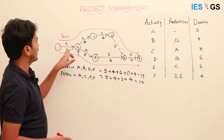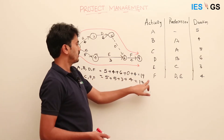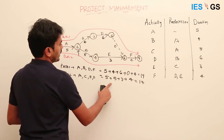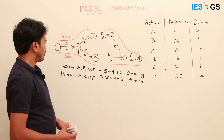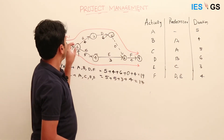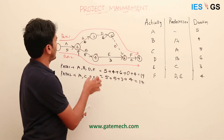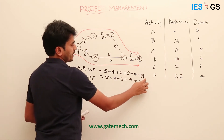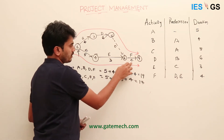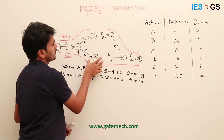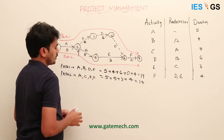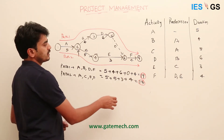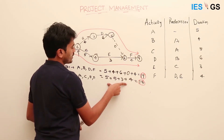Path 1 consisting of activities A, B, D, and F takes 19 days, and Path 2 consisting of activities A, C, E, and F takes 17 days. The project must have all activities completed by the project completion date. Since Path 1 takes 19 days and Path 2 only 17 days, Path 2 activities can be accommodated in parallel. Therefore, completing all project activities takes 19 days.